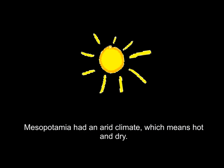Mesopotamia has an arid climate. Arid means hot and dry. You can think of it this way: on the market today there is a deodorant called Arid Extra Dry — right there it tells you, it keeps your armpits nice and dry instead of wet. Arid.